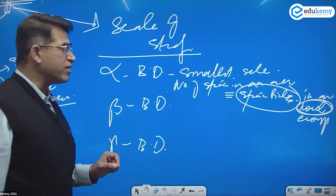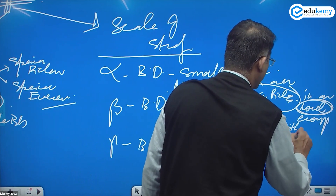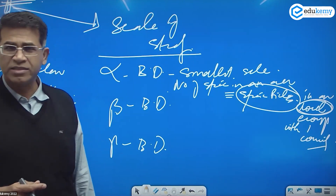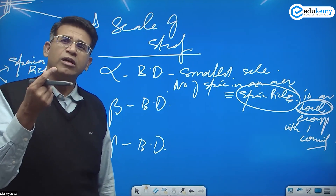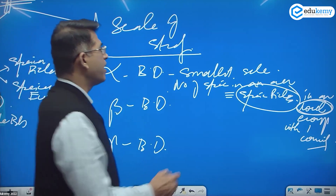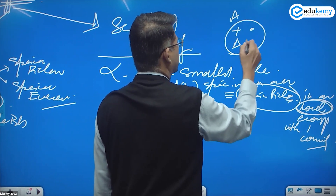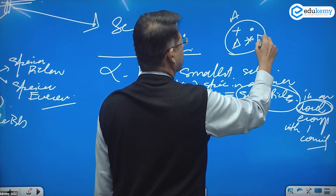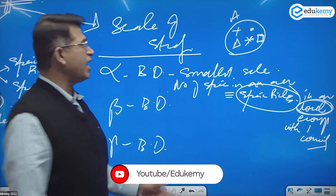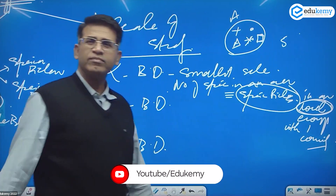Now beta biodiversity — local ecosystem, or within one community. So imagine an area called A. It has cross, dots, triangle, square, and star. Toh iska alpha kya hai? One, two, three, four, five — five is the alpha for this area.